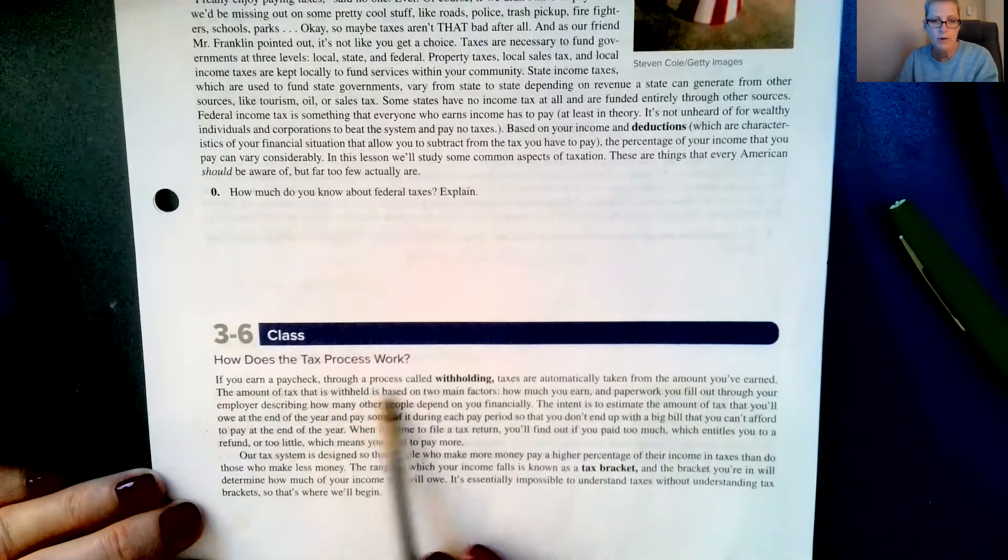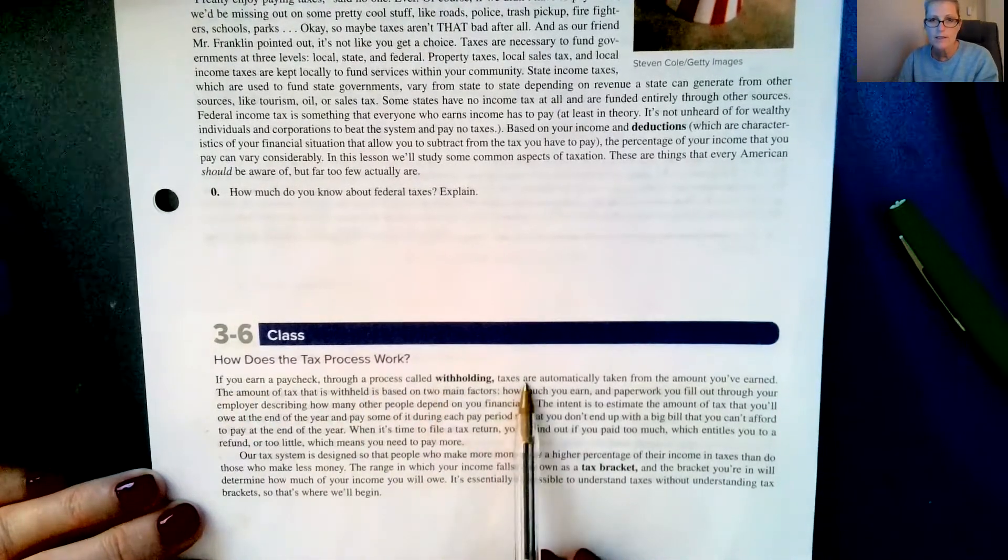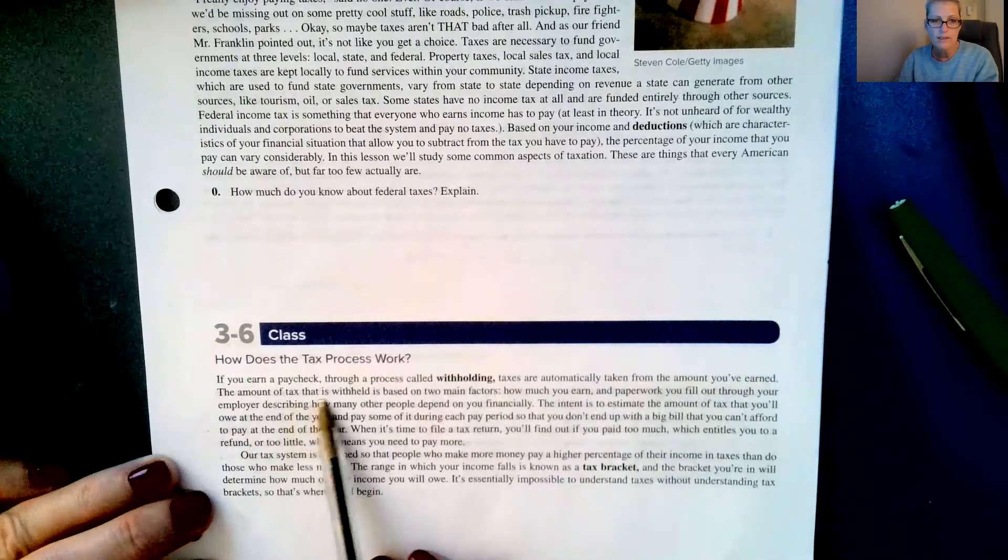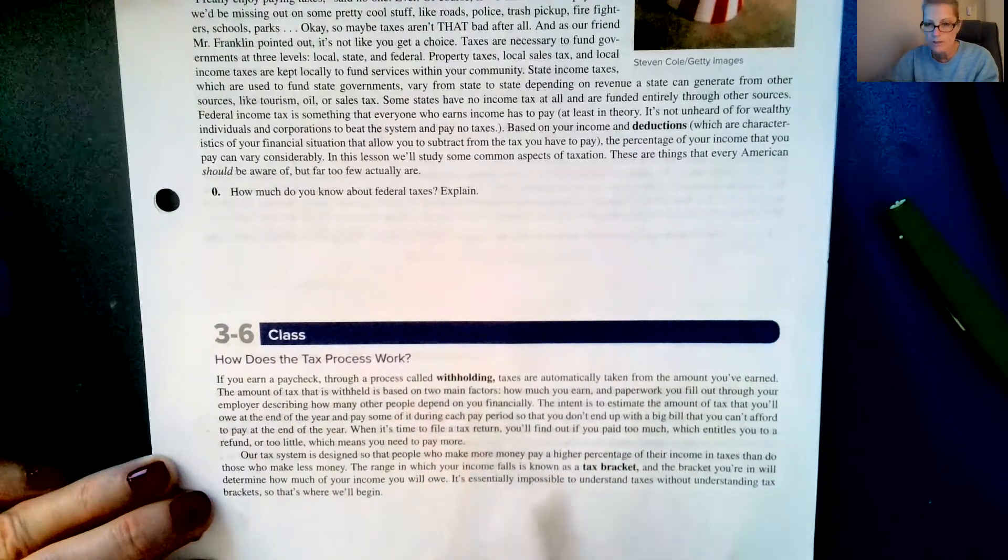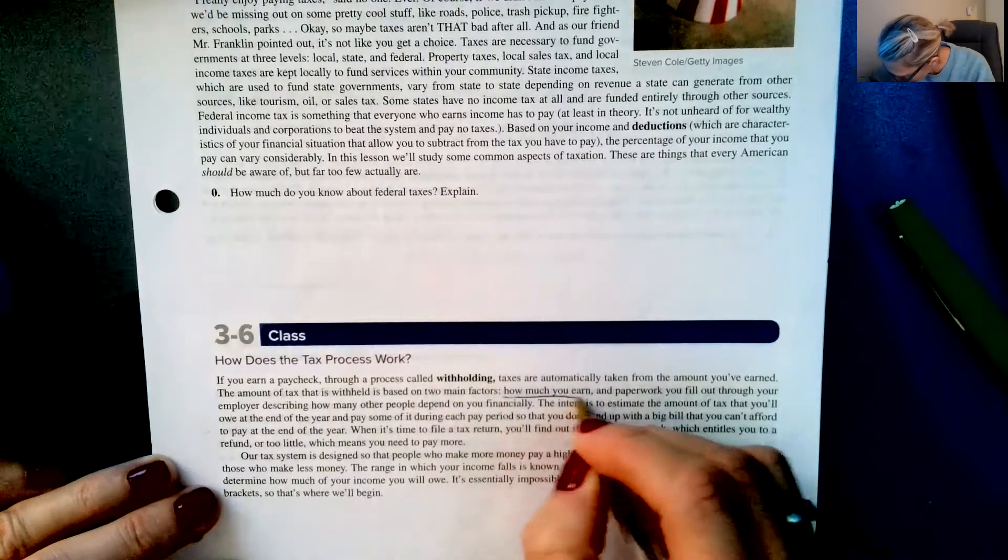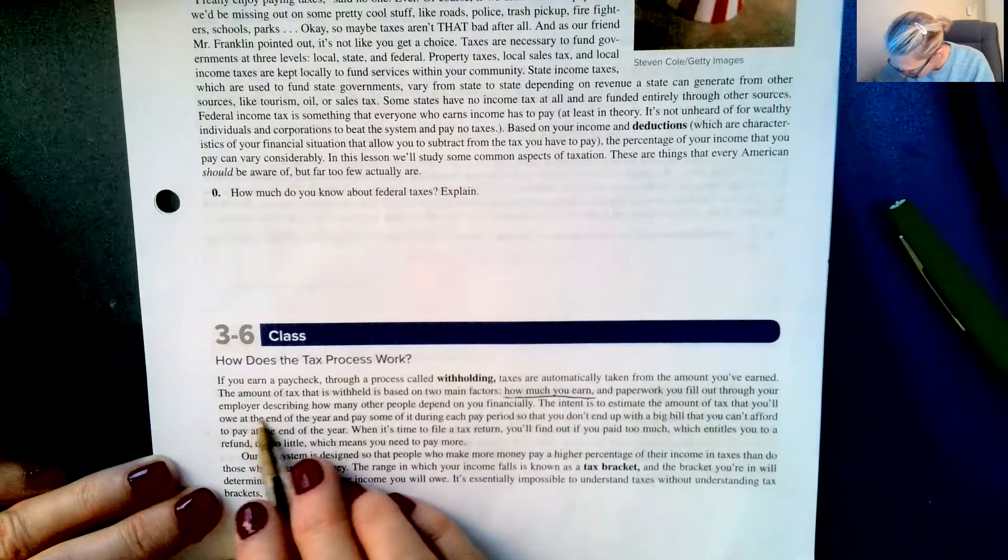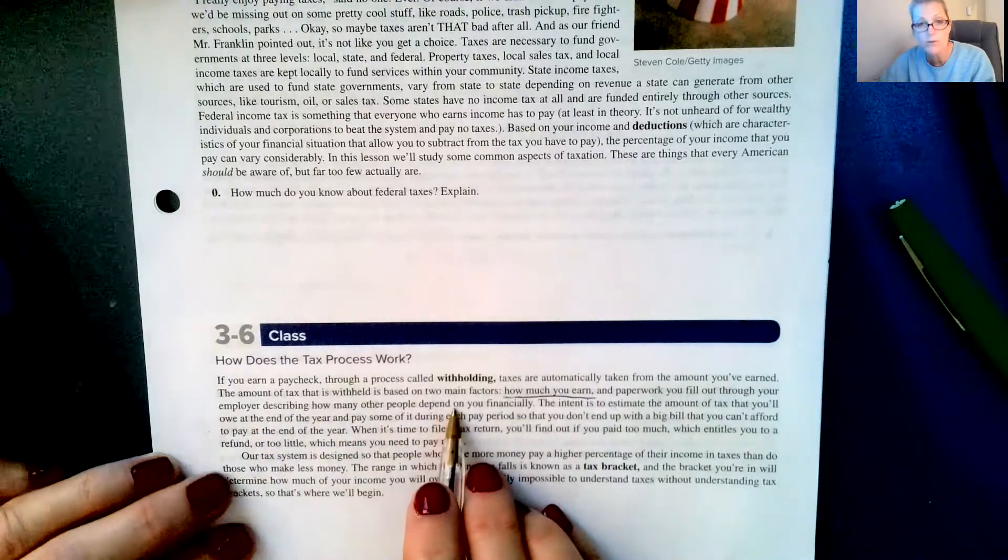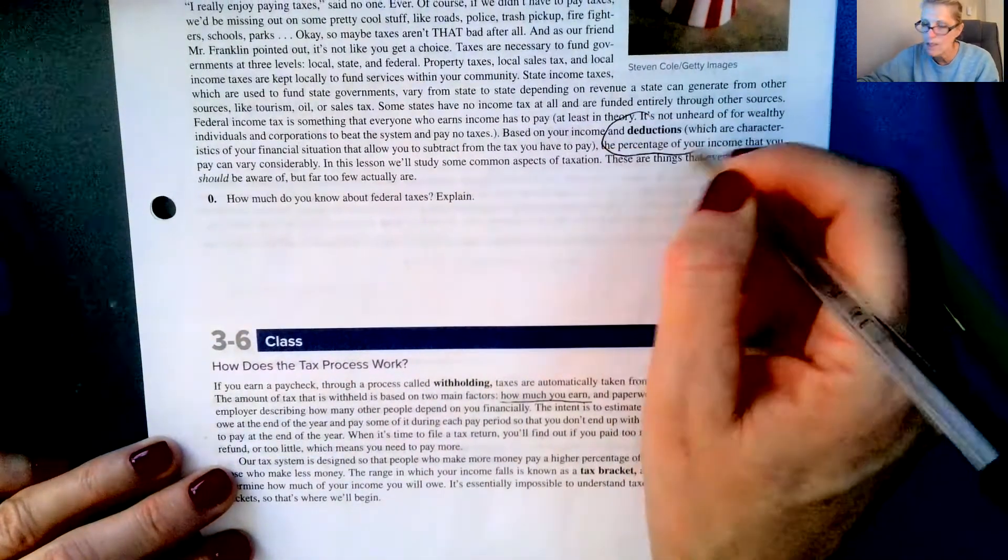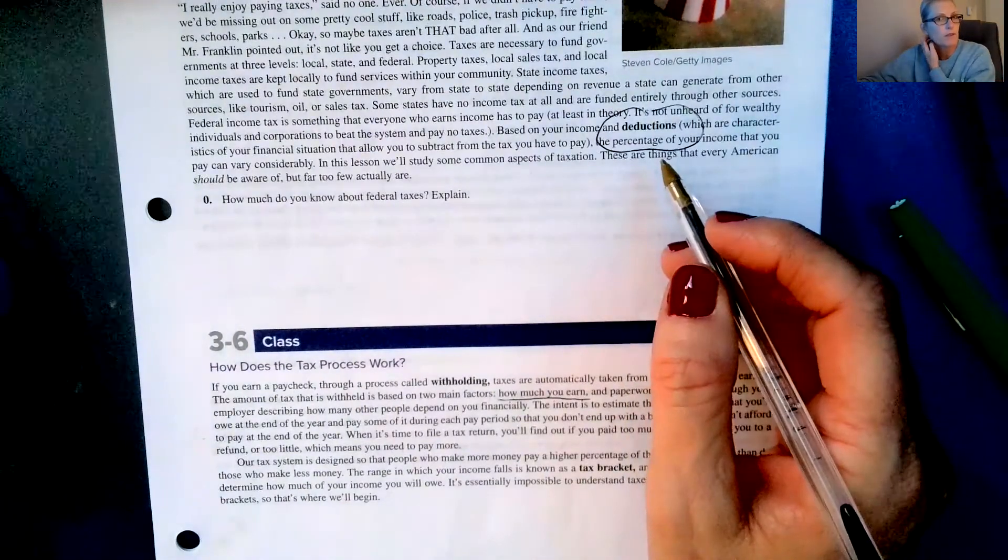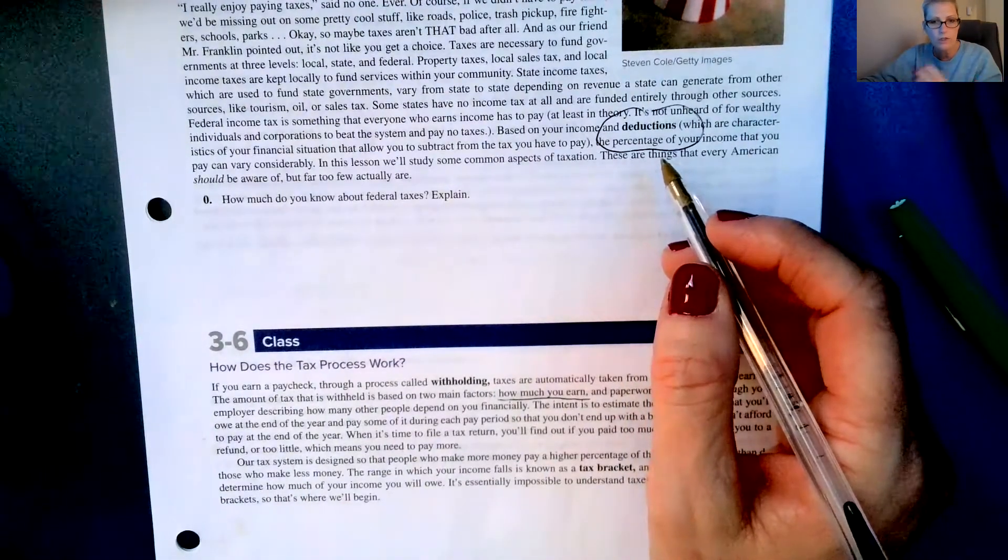So that at the end of the year you don't owe any and you really shouldn't be getting any back because otherwise the government's holding your money for no purpose. If you earn a paycheck through a process called withholding, taxes are automatically taken from the amount you're earned. The amount of tax that is withheld is based on two factors. It's based on how much you earn and paperwork you fill out through your employer describing how many other people depend on you financially. Those are called deductions, so you can have deductions for if you have a spouse that you provide for or children that you provide for.